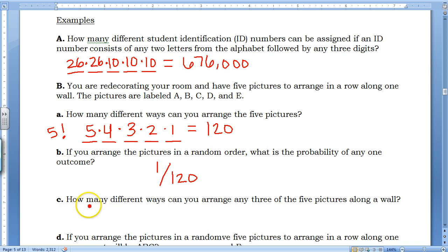Letter C says, How many different ways can you arrange any three of the five pictures along a wall? Well, if I have five pictures to choose from, but I'm only placing three of them, that means I need a 5 times a 4 times a 3. The 5 tells me that I start at 5, and the 3 tells me that I'm using three numbers. The fact that it ends in a 3 is just kind of a coincidence, but we're starting with 5, and we have three spaces to fill, and we count down.